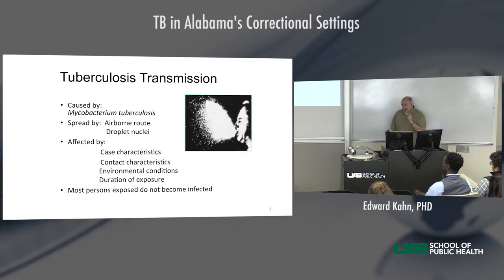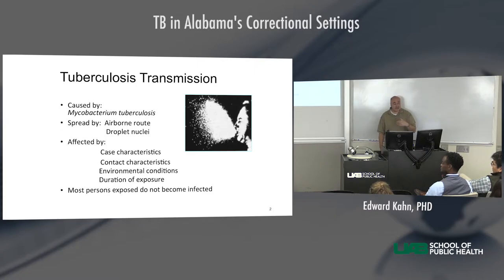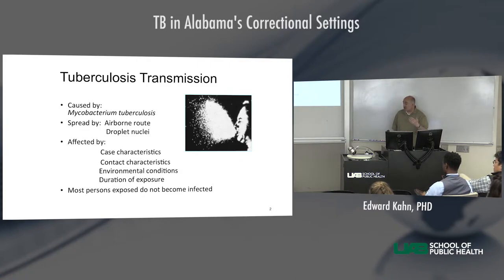In a small enough contact space, in a concentrated enough area, transmission can happen very quickly. We have one very notable case of a highly resistant strain where two guys were just sitting in a car for about 15 minutes with the windows up, and transmission occurred in that short period of time. Those are examples of environmental conditions and duration of exposure.